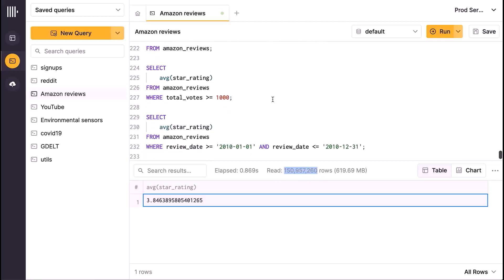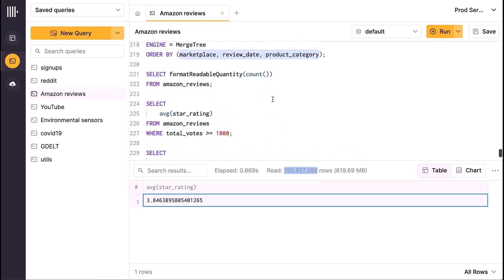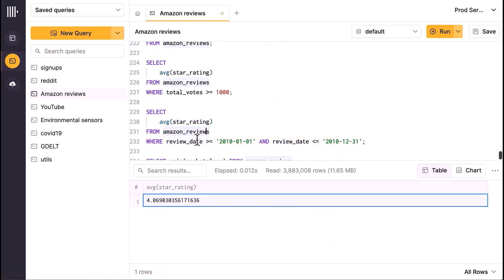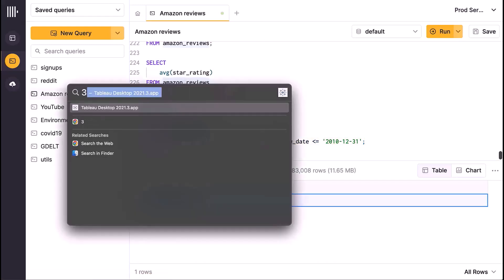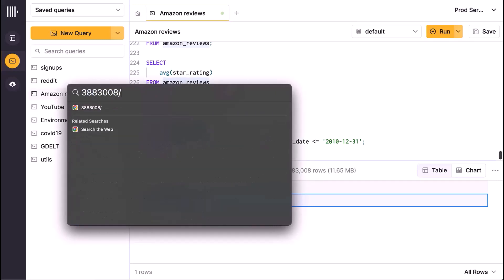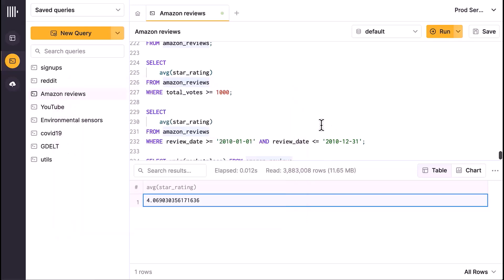If I filter on something like review_date, notice review_date is in the primary key. Well, here it was first of all way faster, and second of all, notice it only had to query 3,883,008 rows. Notice it's, coincidentally, not coincidentally, exactly a multiple of 8,192. That's 474 granules that it had to process, as opposed to all 150 million rows. It only had to process 3.8 million rows. That's the beauty of the primary key.